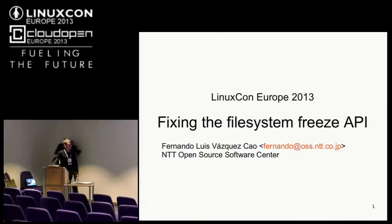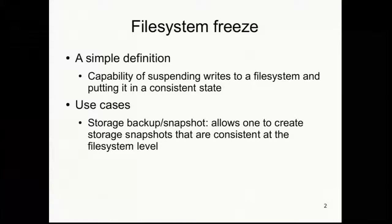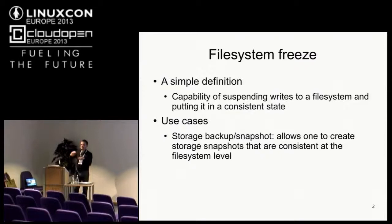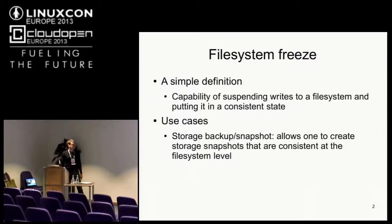What's File System Freeze? Basically, it's the capability of suspending writes to a file system and putting that file system in a consistent state. By consistent state, I mean a state such that if we create a copy of that file system, we can actually mount it and access the data that is there, and all the metadata reflects what's on disk. The most common use case for this feature is storage backups, because File System Freeze allows you to create storage snapshots that are consistent at the file system level.